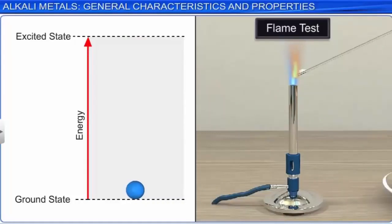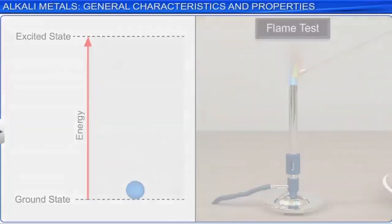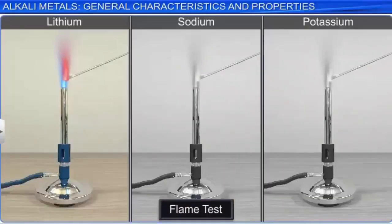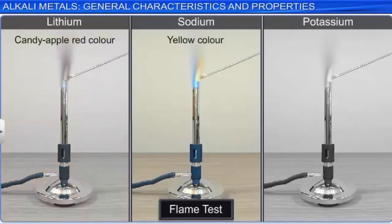Looking at the results of some flame tests: lithium gives a candy apple red color. The yellow color is characteristic of sodium—you may have observed it if a boiling salt water sample spills over when cooking on a gas stove. Potassium flame tests emit a lilac colored flame.